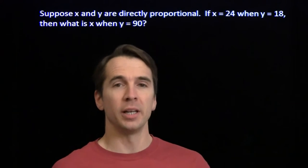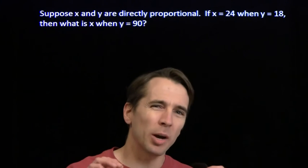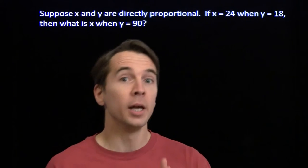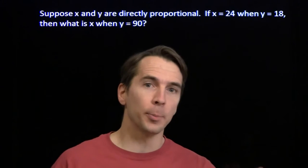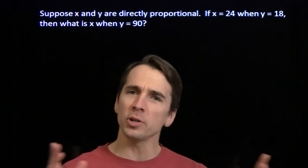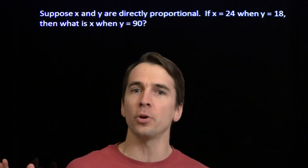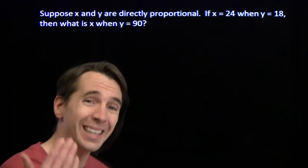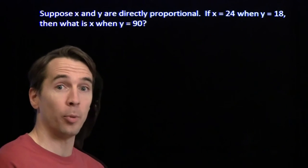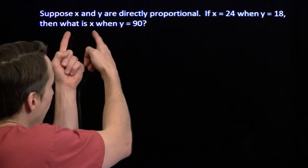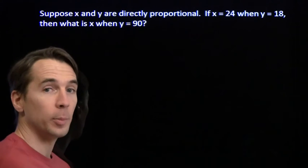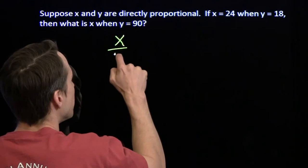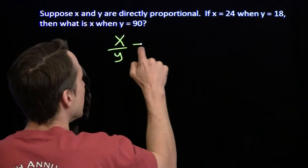We're going to talk about a very particular kind of proportion: direct proportion. There are other kinds of proportion we'll talk about in other videos. We're going to start with direct proportion because if you've already learned about proportions, this is the kind you learned about. When we say x and y are directly proportional, all we mean is that their ratio is a constant.